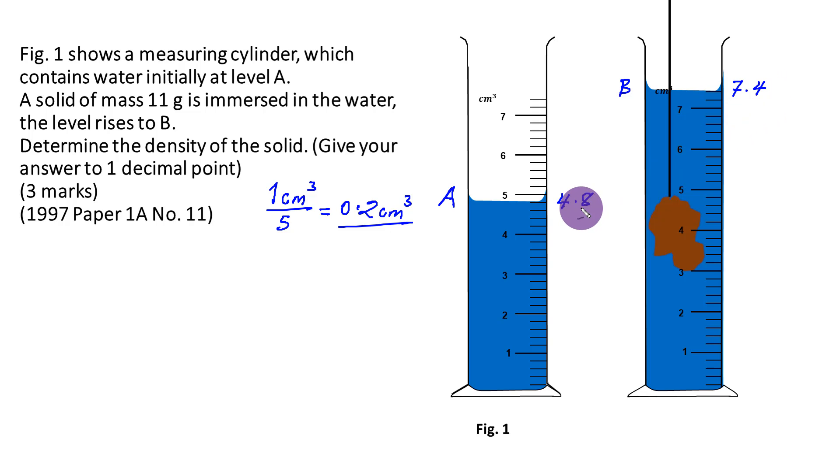This is V1 and this is V2. The difference between the two scale readings is going to give me the volume of the water displaced when this solid is immersed in the water. Now why is that? When the solid moves into the water,